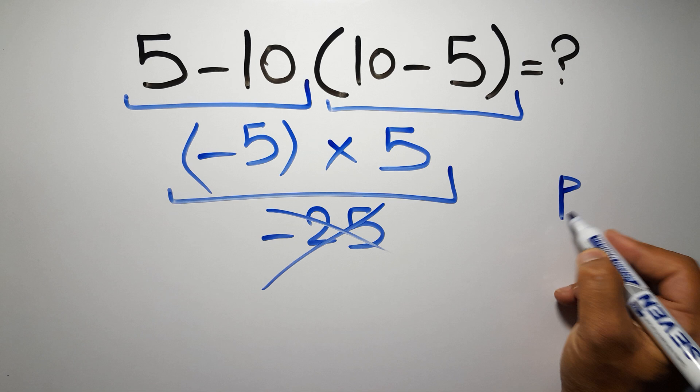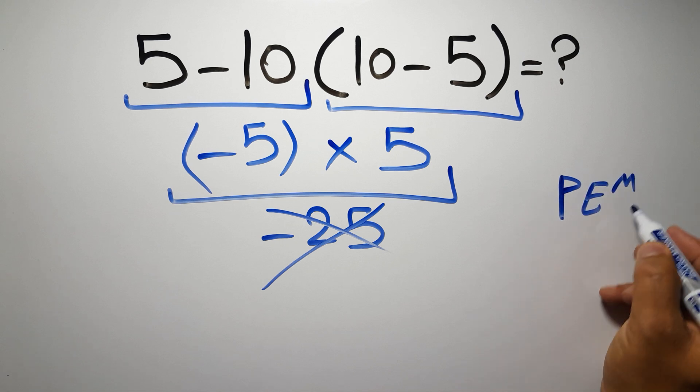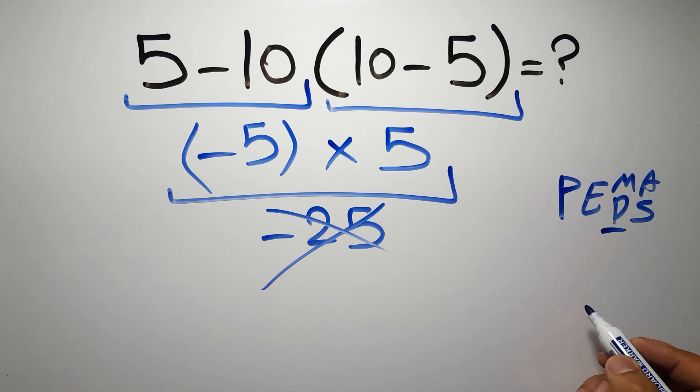First we have to do parentheses, then exponents, then multiplication or division, and finally addition or subtraction. Remember that multiplication and division have equal priority and we have to work from left to right, and the same applies to addition and subtraction.